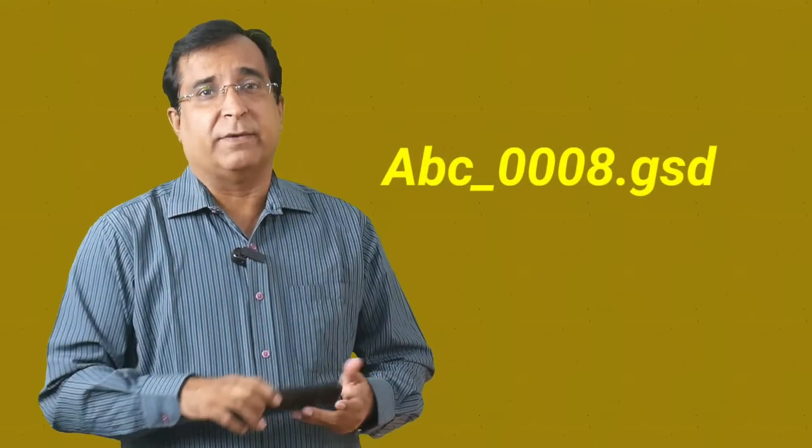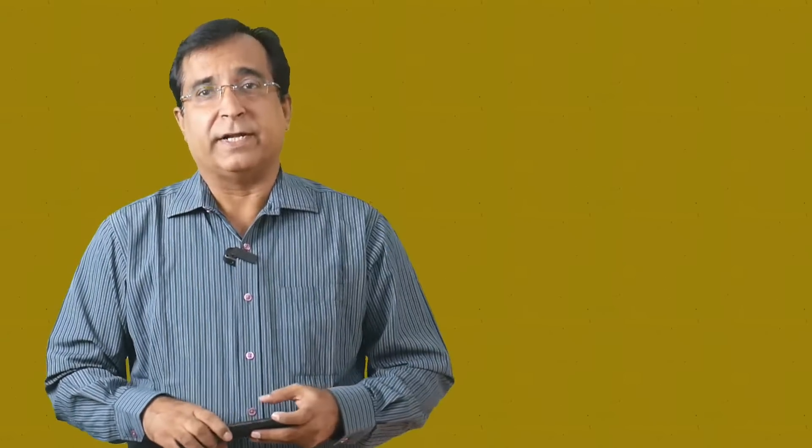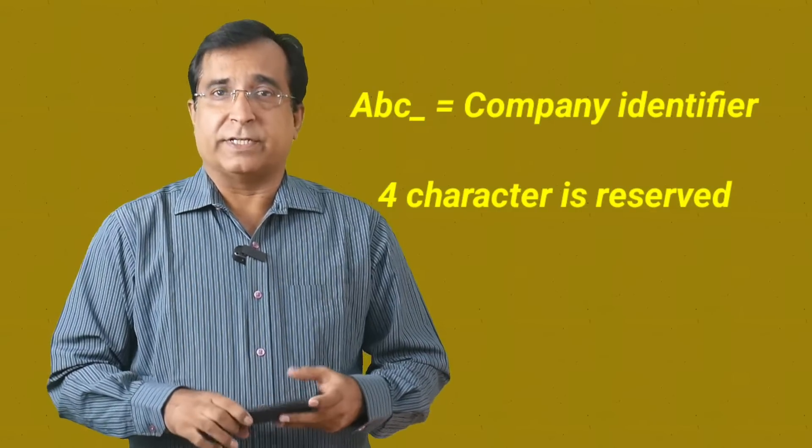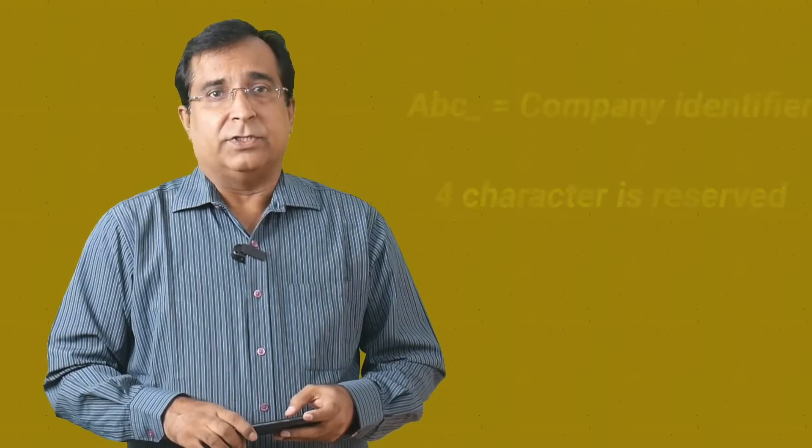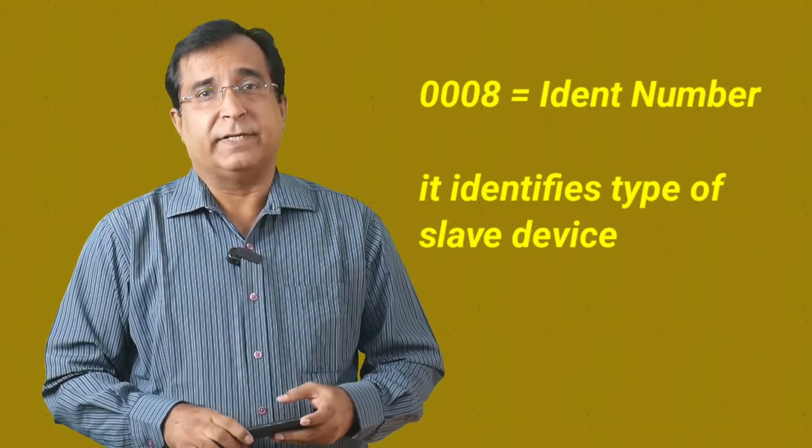The first thing you can notice is its file name which appears in the language used for writing the GSD file. The following rule is applied for GSD file names. Here you can see a file name is ABC underscore underscore 0008.gsd. Now here ABC underscore underscore is the company identifier, four characters reserved for that. 0008 is an ident number. It identifies the type of device you are using and is always four characters reserved and represented in hexadecimal.